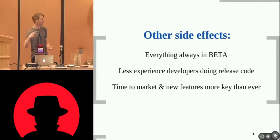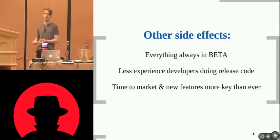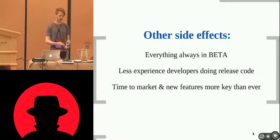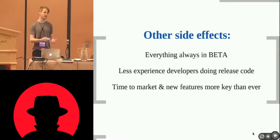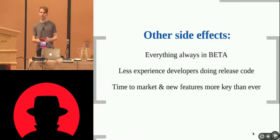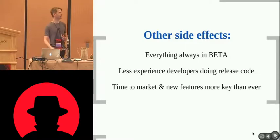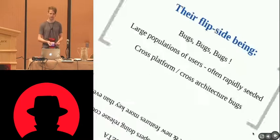Other side effects of these new paradigms: everything is always in beta, meaning features are less tested and more likely to have bugs. The use of higher-level languages means a developer needs far less skill — they won't have years of training in a difficult language and may only know Visual Studio and C Sharp. In an increasingly competitive market, time to market is key, and if that means less QA, that means more bugs.